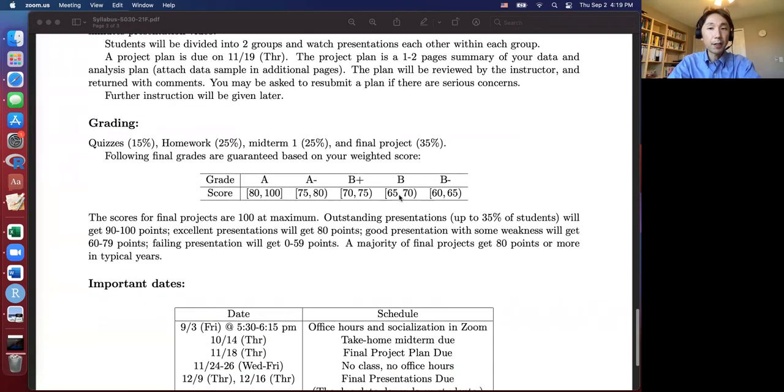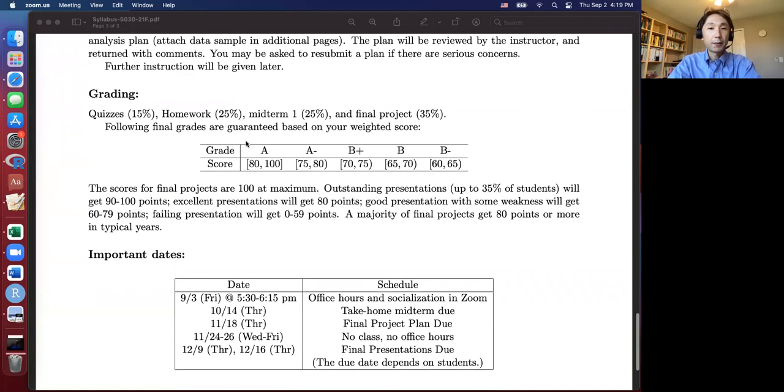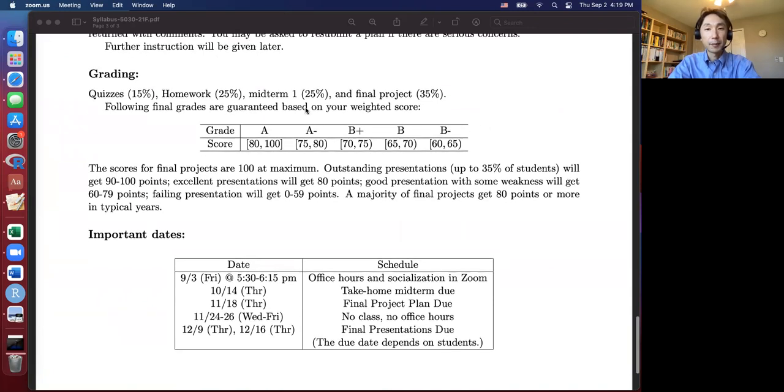Grading: quizzes and homework, midterm, and final project. 15%, 25%, 25%, and 35%. If you get 80 points or more, the grade A is guaranteed. If less than that, basically you will get other grades.